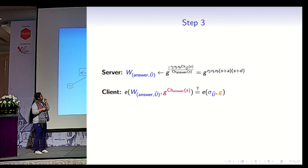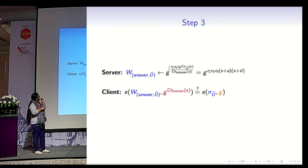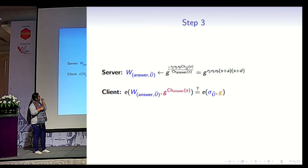Once the verification of sigma(Ũ) is done, the only thing remaining is to show the answer is a subset of this multi-set union, which is also a generalization of the set membership technique in accumulation. The server computes the witness, which is G to the (R2·R5·R9 · ch(Ũ) / ch(answer)) evaluated at s. Verification checks whether the bilinear map of the witness and G^(ch(answer, s)) equals G^(sigma(Ũ)) and G. At this point the client is convinced that sigma(Ũ) is computed correctly. That is the crux of how set union is done.